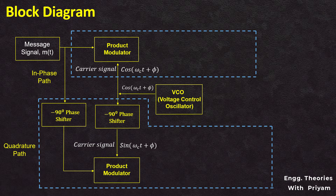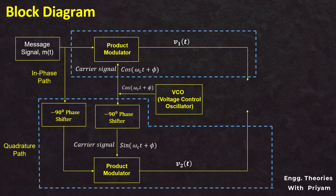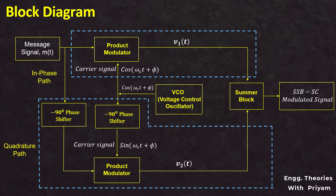The two signals generated from the two product modulators, V1(t) and V2(t), are given as input to the summer block. The summer block produces an output that is either the sum or the difference of the two input signals based on their polarity. This SSBSC modulator consists of two parallel paths — the in-phase path and the quadrature path — each involving a product modulator, with sinusoidal carrier waves from the VCO applied in phase quadrature using a phase shifter.